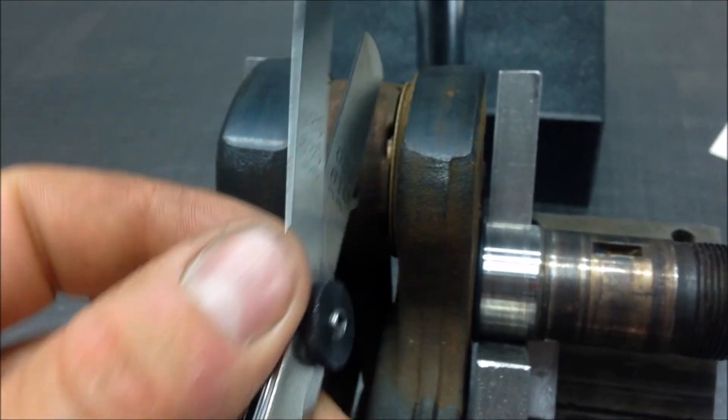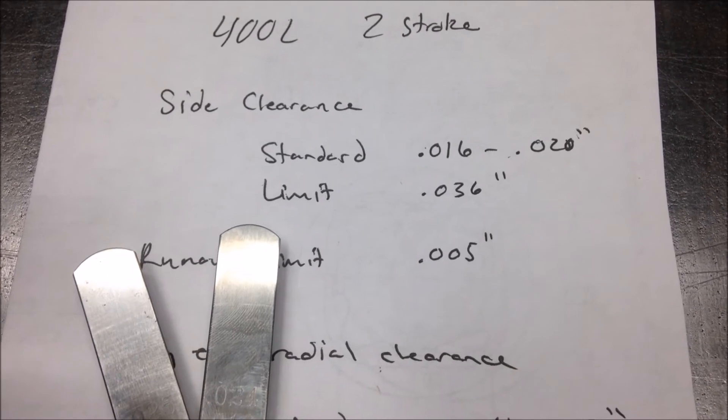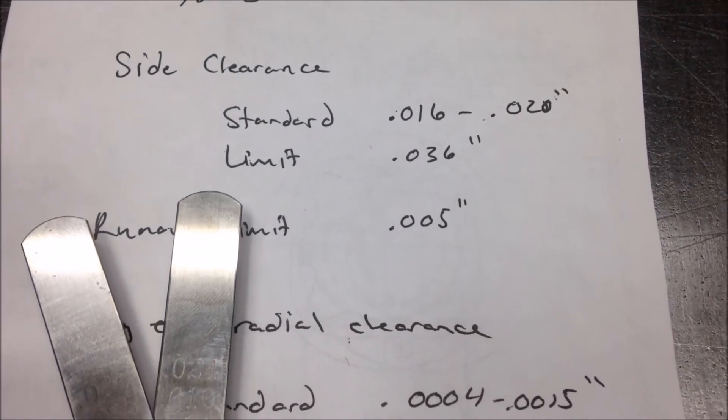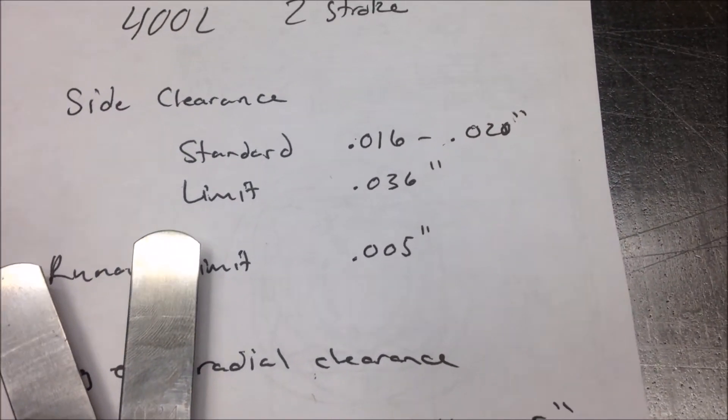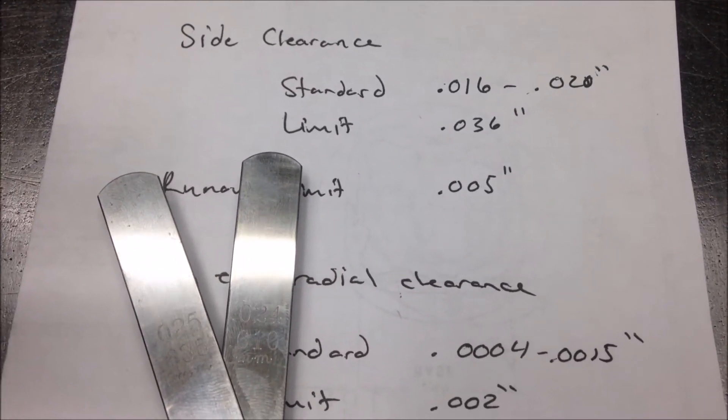24 thousandths goes in with very little resistance. When you check your spec sheet here, the standard goes up to 20 thousandths, but it does not require service until 36 thousandths. So at 24 thousandths, we're good.